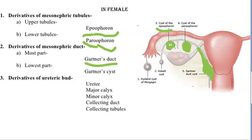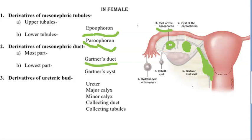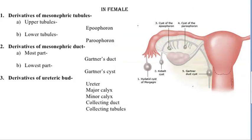They will ask you the abnormalities of the Wolffian remnant: cyst of epoophoron, cyst of paroophoron, and Gartner's duct cyst. So let's note the names: epoophoron cyst, paroophoron cyst, Gartner's duct cyst.